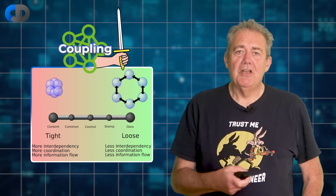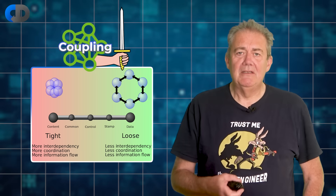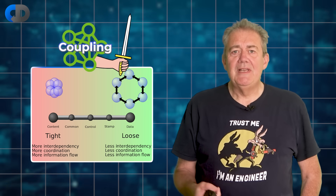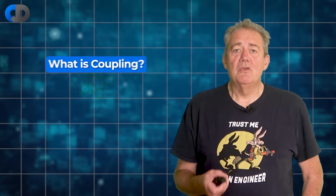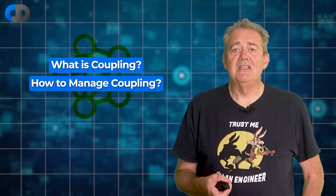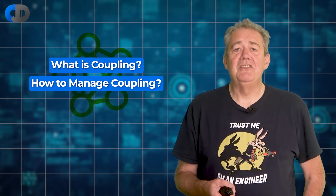Coupling in software is often seen as the enemy. Tight coupling bad, loose coupling good. But it's not really that simple. So what really do we mean by coupling, and what does it take to manage it to our advantage?